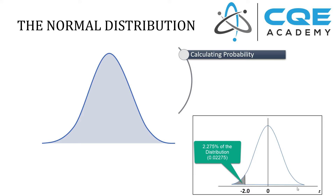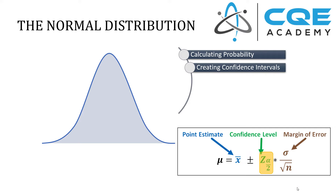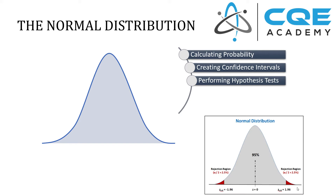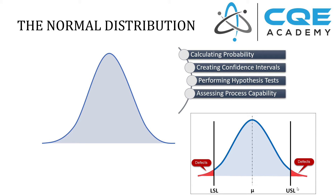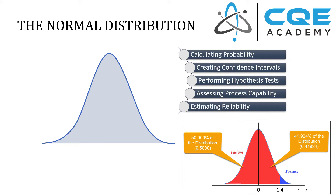Things like calculating probability, creating confidence intervals — which requires you to understand the idea of a z-score — performing hypothesis tests, which also requires you to use the Z transformation and probability to make accept or reject decisions, assessing process capability, estimating reliability, or even doing acceptance sampling are all founded on this basic idea of the normal distribution. So it's really important that you have a solid understanding of exactly how it works. Let's start with the most basic concepts.